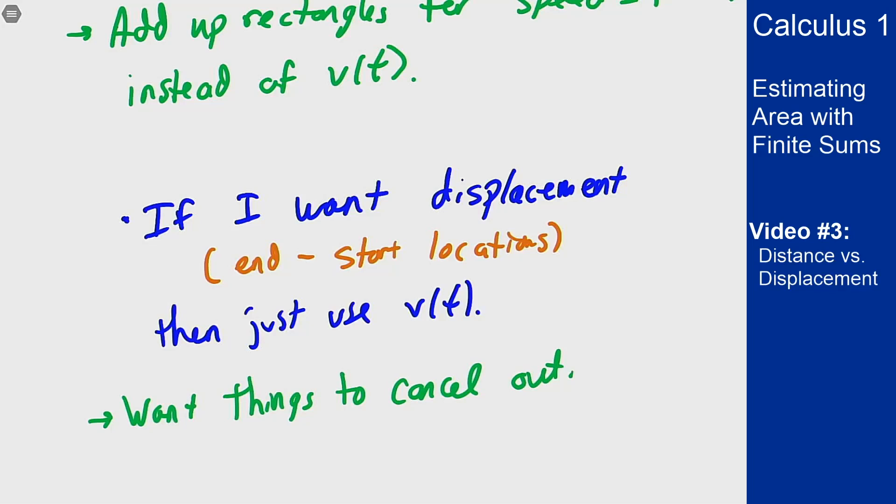So there's the idea of distance versus displacement and how the two relate in terms of motion of an object. For displacement, I only care about where I start, where I end, and what the distance between those two points is. For distance traveled, I actually care about what I did along the way, and I never want to cancel out if I'm looking at distance traveled, which is why I need absolute values and not just the velocity itself to make sure I'm always adding and not canceling things out as I go.